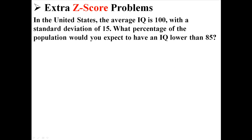Now I've already talked about what z-scores are, so now I have two extra problems to help people understand a little bit more about the concept. So here's the first problem. In the United States, the average IQ is 100 with a standard deviation of 15. What percentage of the population would you expect to have an IQ lower than 85?